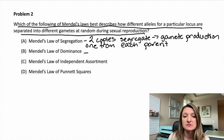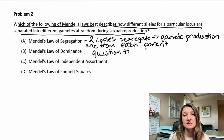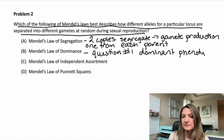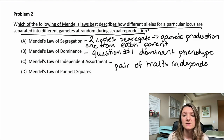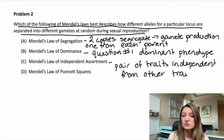B is Mendel's law of dominance. We see this in question number one, where the brown fur organism was dominant over the white fur organism — when you see one phenotype, or how the organism actually looks, expressed. And then C, we have Mendel's law of independent assortment. That means that when you have two pairs of traits, they're independent of each other, so one is not linked to the other. You will sometimes see this with sex-linked traits, but not necessarily in Mendel's laws.